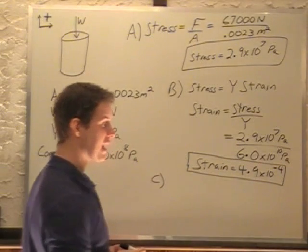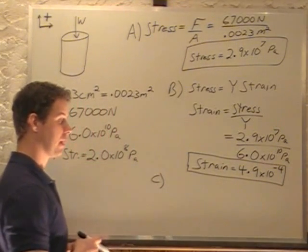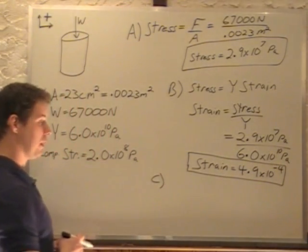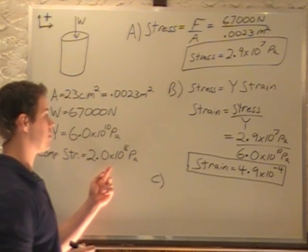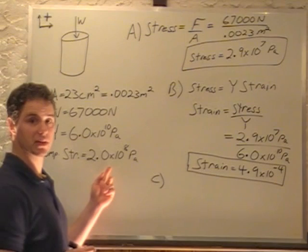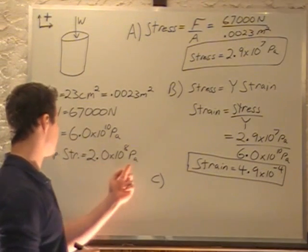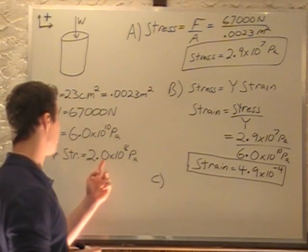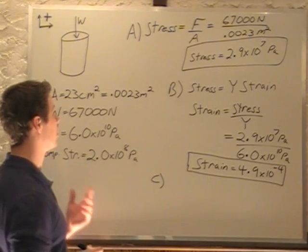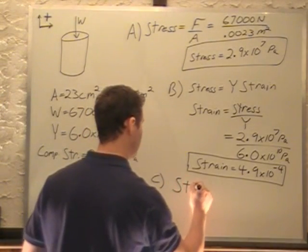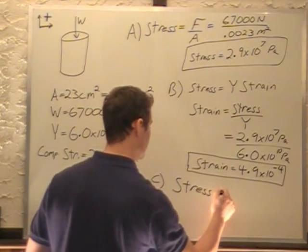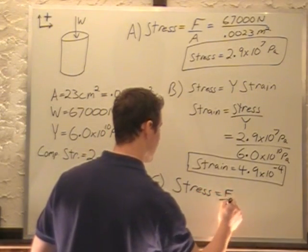C asks us what is the maximum weight that our column can support. We're told that our compressive strength is 2.0 times 10 to the 8th pascals. So this is the maximum load, the maximum stress that we're going to be able to take. So if we say that stress equals force divided by area.